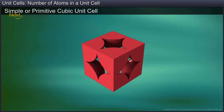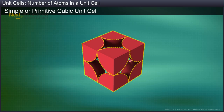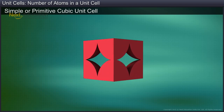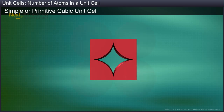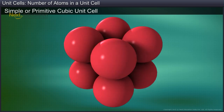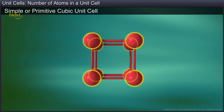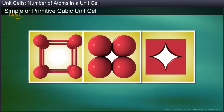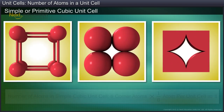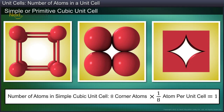From this, it is evident that each atom at the corners contributes one-eighth of its original volume to each unit cell. Thus, the number of atoms in each unit cell is equal to eight corner atoms multiplied by one-eighth of an atom per unit cell, which equals one.